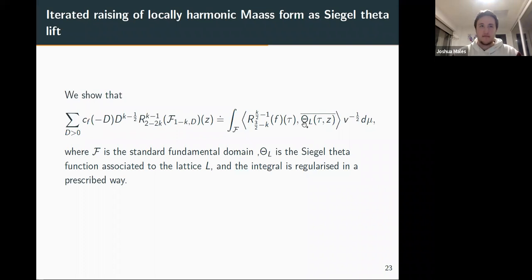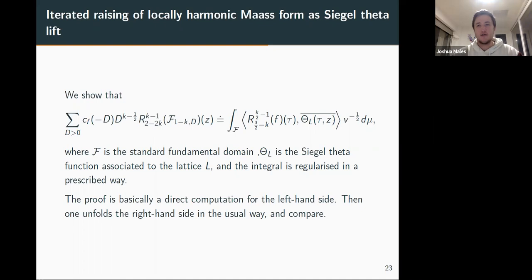Step two shows that the locally harmonic Maass form under iterated raising is a Siegel theta lift. We show that this combination — coefficients of f times some power of d — gives, up to a constant, our desired Siegel theta lift with a bilinear pairing. This is proved by direct computation: on the left-hand side you compute the action of the raisings on f, which gives Gauss hypergeometric functions, and on the right-hand side you use unfolding.